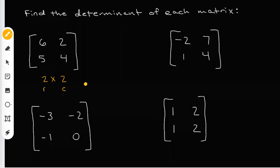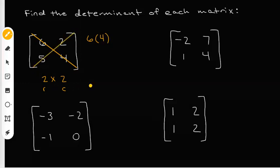To find the determinant, you use the main diagonal and the counter diagonal. I'm going to draw a line through the main diagonal — it's going to cross three, six, and four, so I do six times four. Then I use the counter diagonal, which runs in the opposite direction, hitting two and five, so we do two times five.